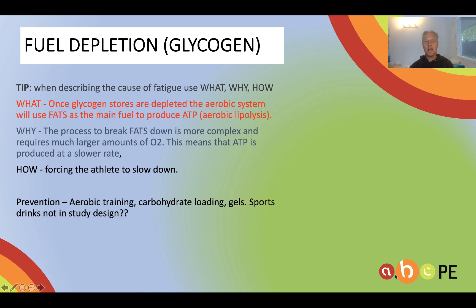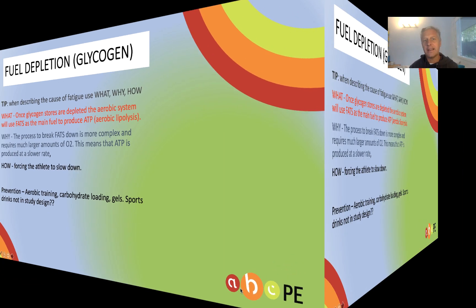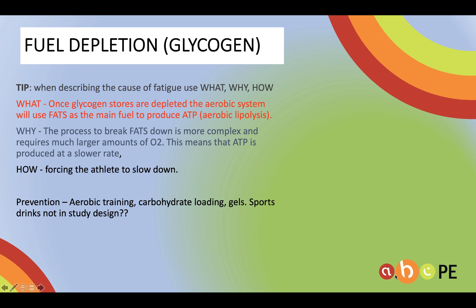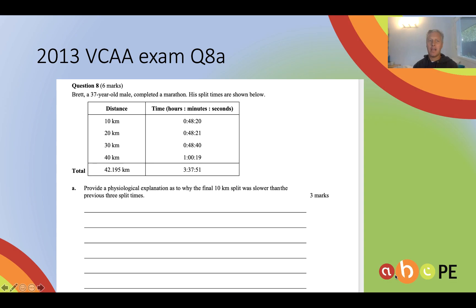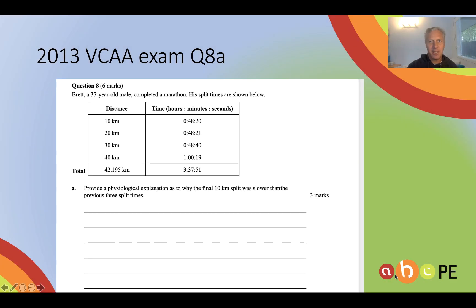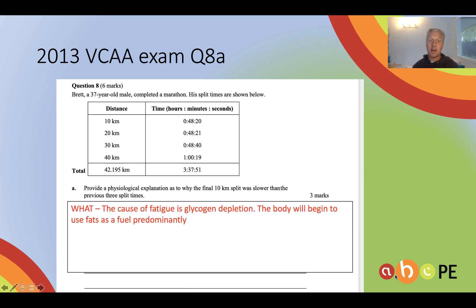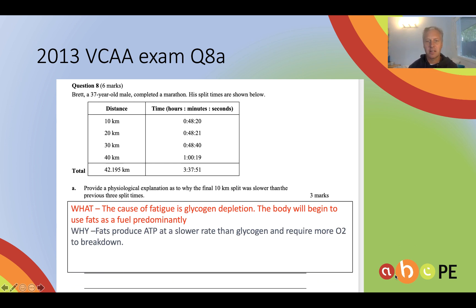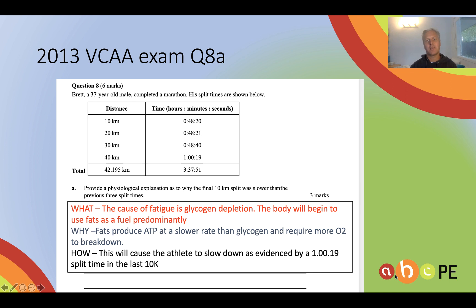Let's have a look at an exam question, and again we break it down into what, why, and how. The cause of fatigue is glycogen depletion — there's no mention of how hot it is, so it's leading me to glycogen depletion. The body will use fats predominantly, and they produce ATP at a slower rate because they require more oxygen to break down and are a more complex molecule. This will cause the athlete to slow. I've used data there just to nail it, noting that the last split took an hour and 19 seconds.